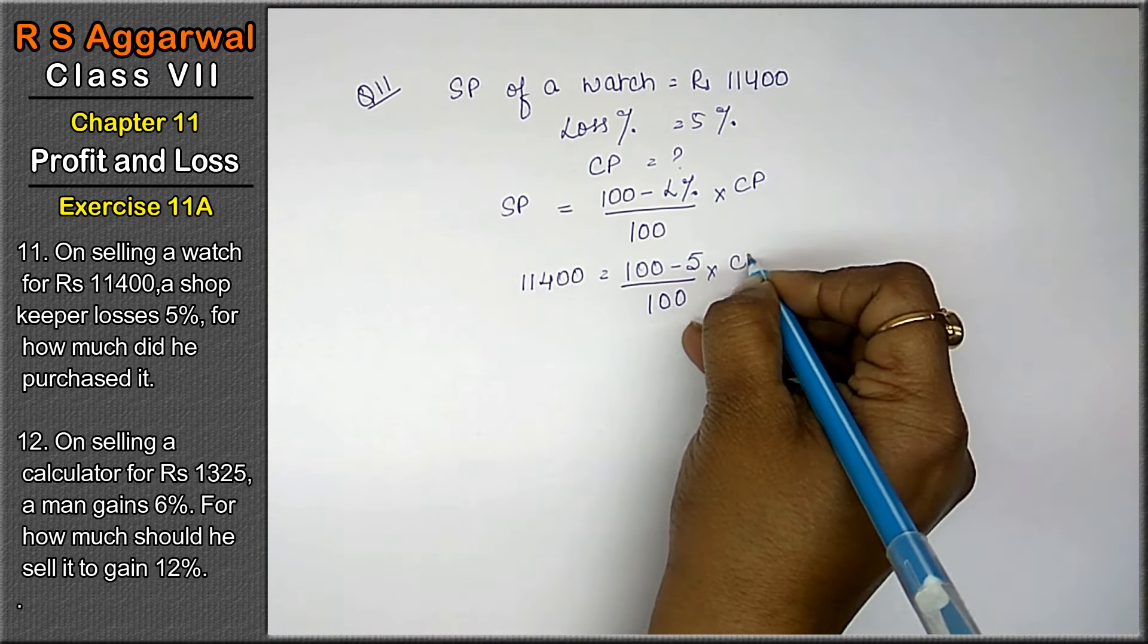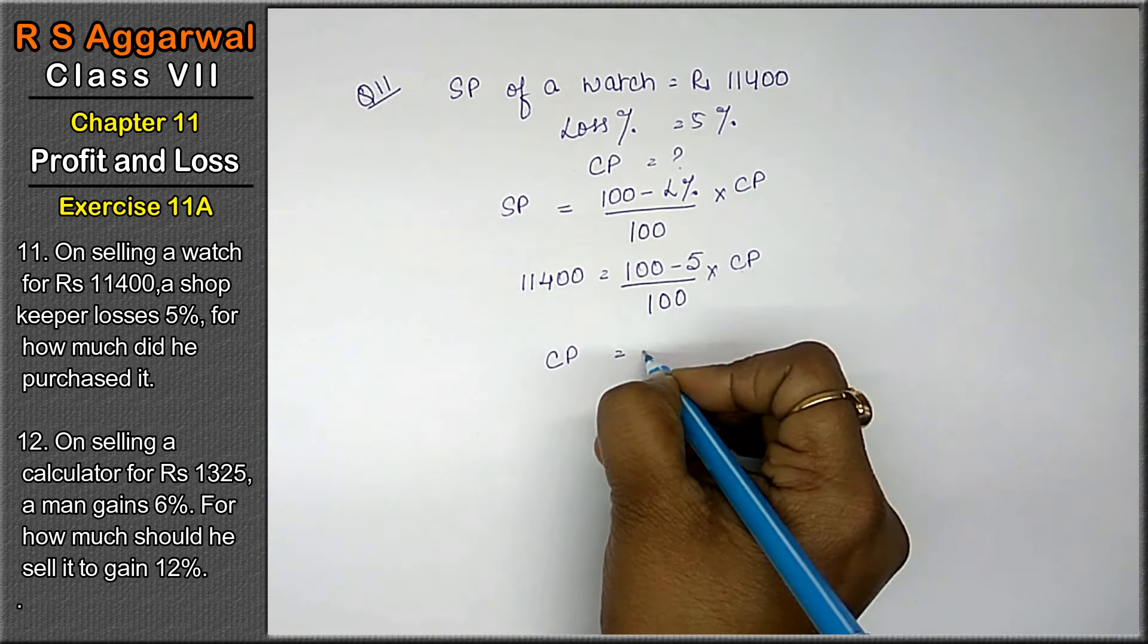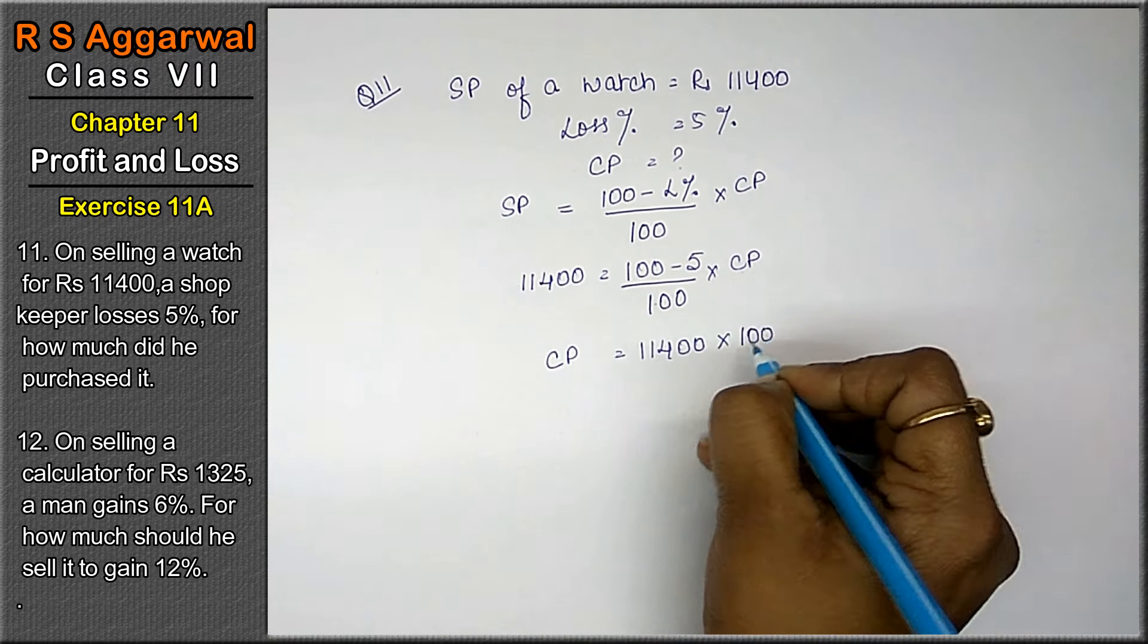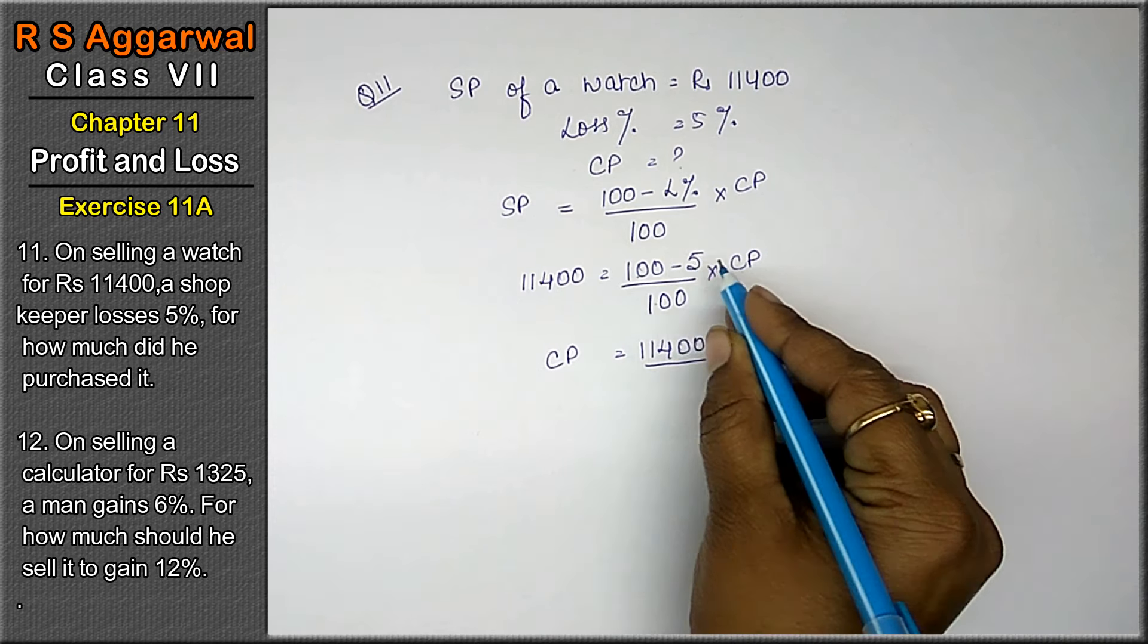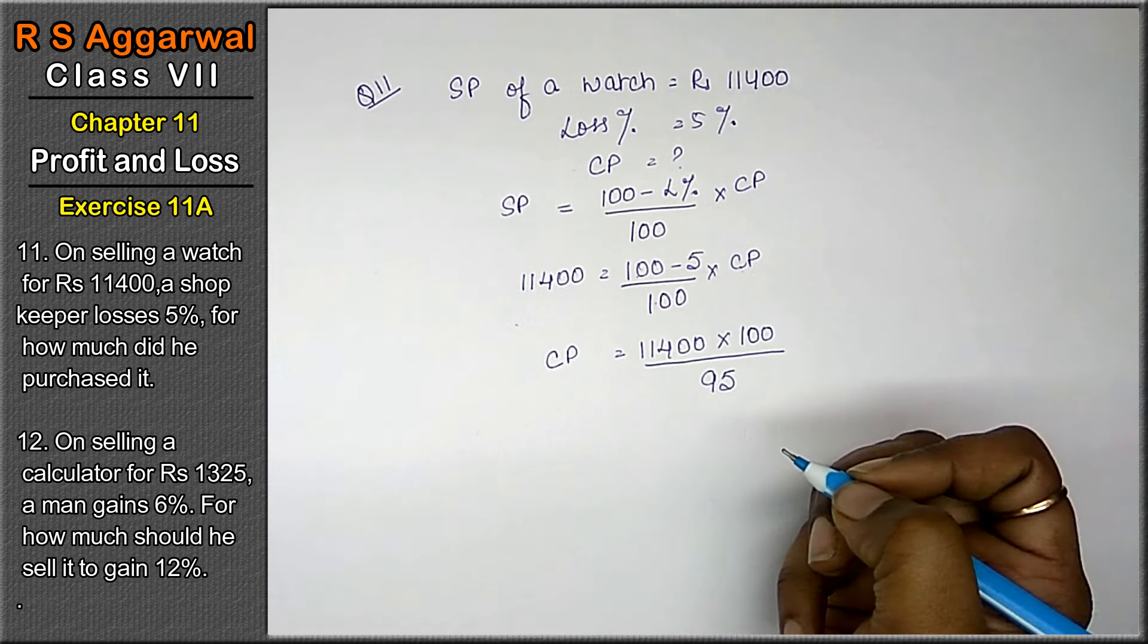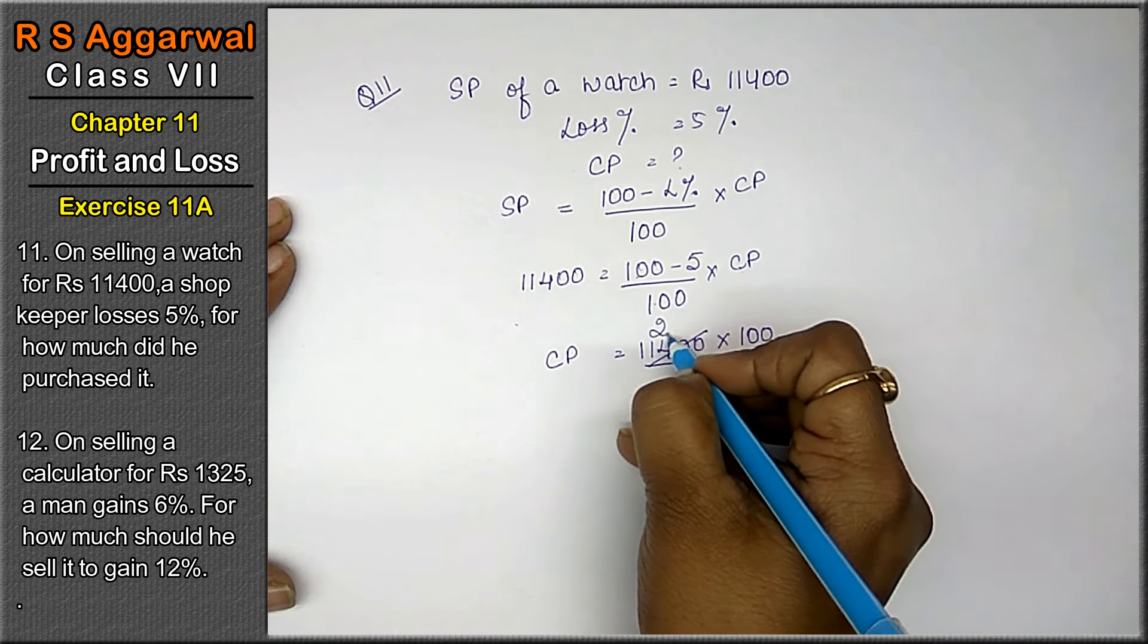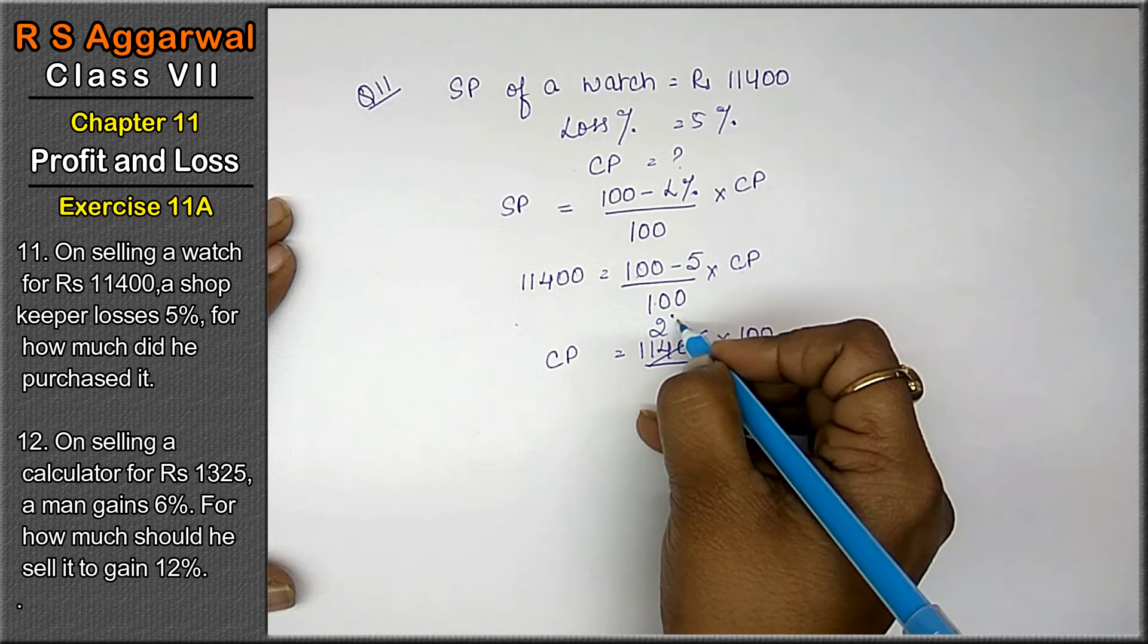Now, SP is 11,400. 100 divided becomes multiply, 100 minus 5, that means 95 in the denominator with CP. So multiply by 100 and divide by 95. Now 5 × 1 is 5, 5 × 9 is 45, 5 × 2 is 10, 5 × 2 is 10.